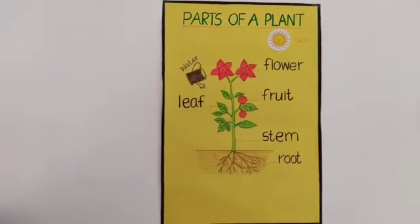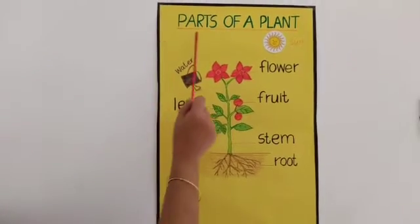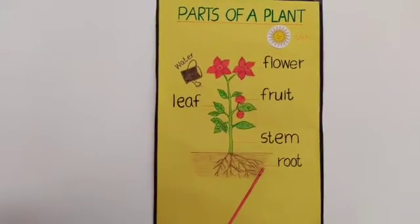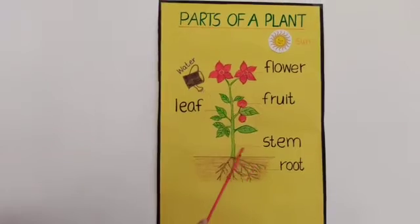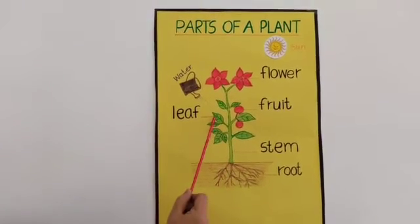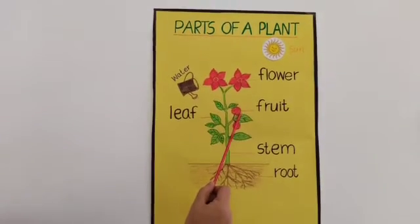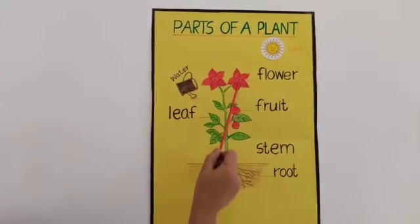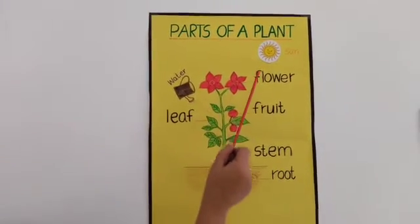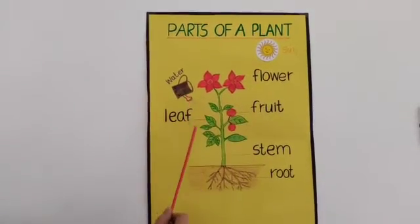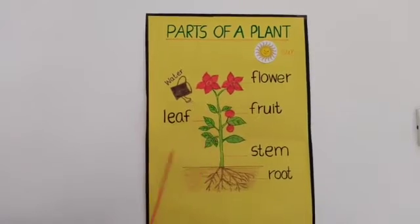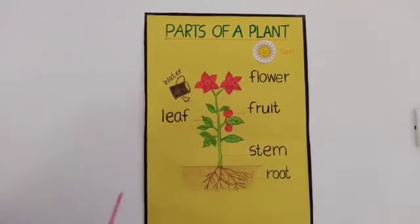Let's have a recap. Parts of a plant: Root, Stem, Leaf, Fruit, Flower. With the help of sunlight and water, leaves make food for the plant.